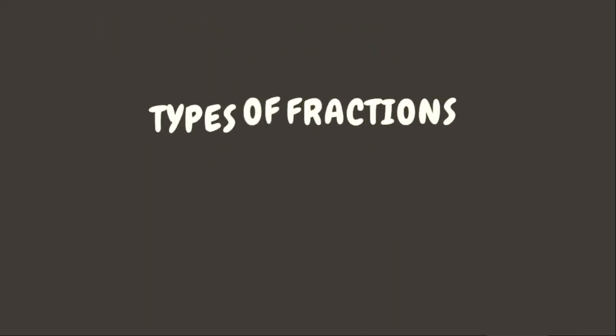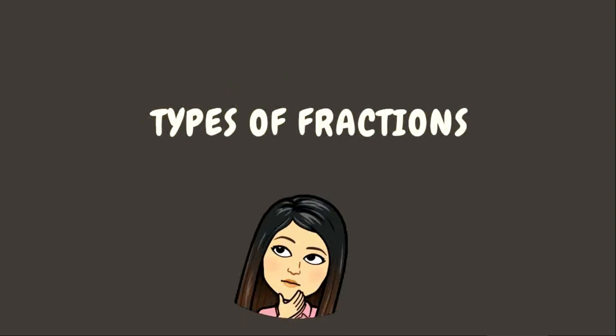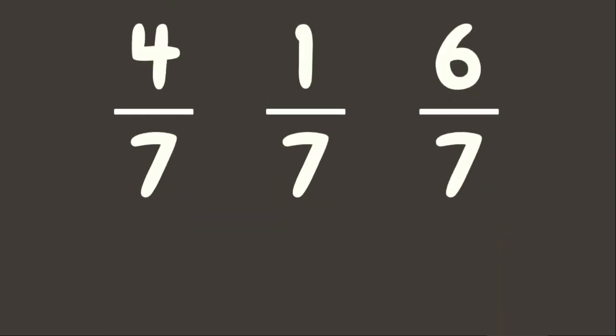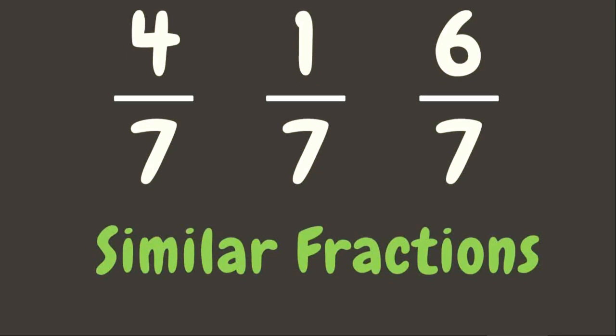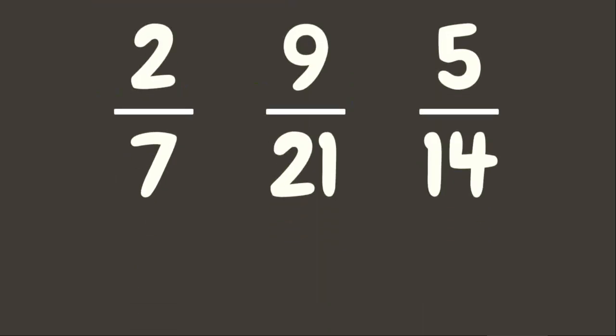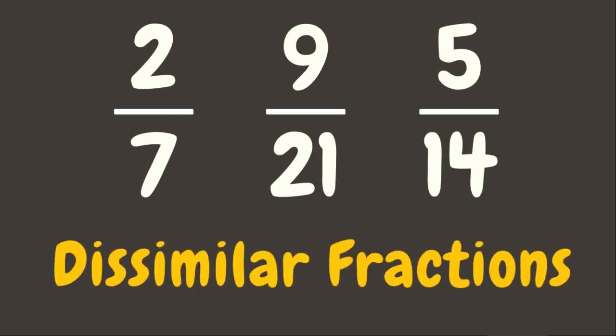There are different types of fractions. Look at these fractions. What do you observe? They have same denominators. They are called similar fractions. If the fractions have different denominators, they are called dissimilar fractions.